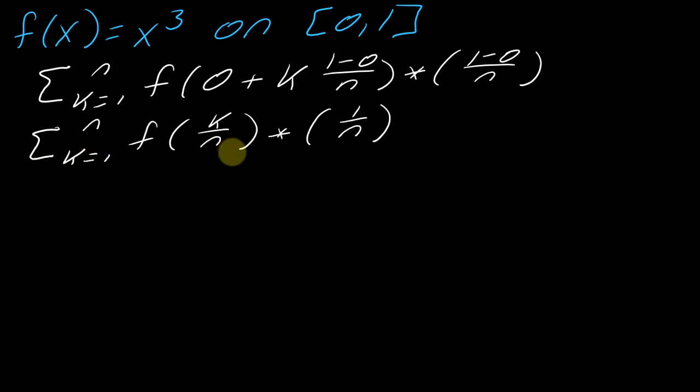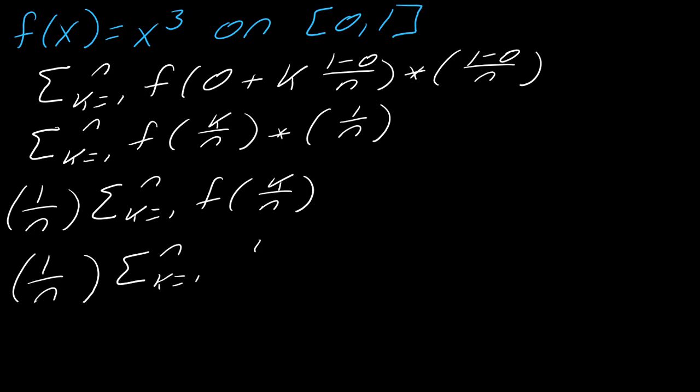So now we can really get the party going. Looking at this, I really want to simplify this sum as much as possible. The sum has everything to do with the k's. The n's we really just think of as constants. So this 1 over n, I'm going to bring it out to the front. So now we have to evaluate this f of k over n. Basically now I have to plug in k over n into this function. So this will be 1 over n, k equals 1 to n, and then this is k over n cubed.